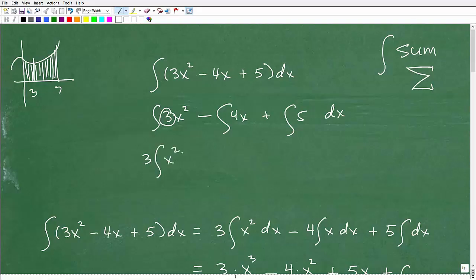So for example, the integral of 3x², I could factor out this constant, so it's going to be 3 times the integral of x², minus, here I could do the same thing, 4 times the integral of x, plus, here this is just going to be the integral of 5 dx.